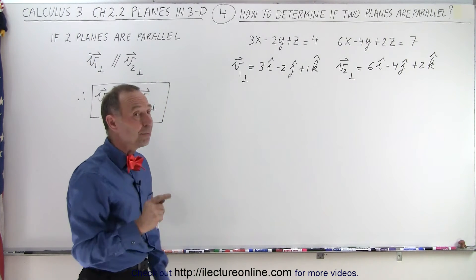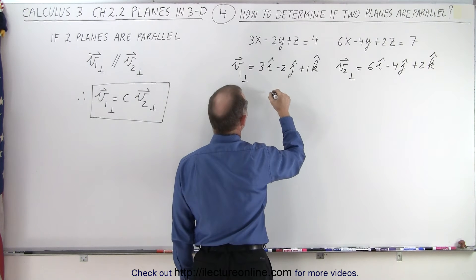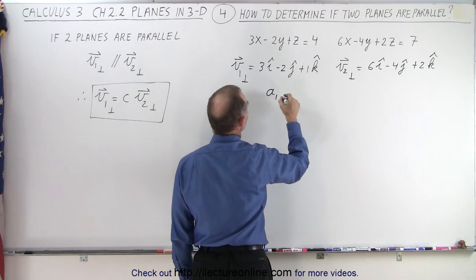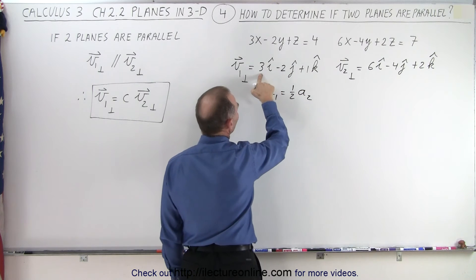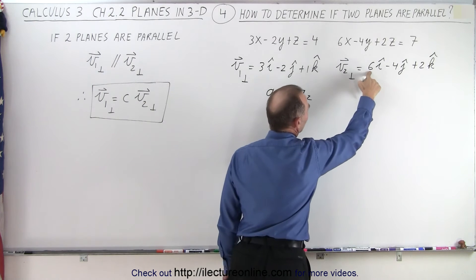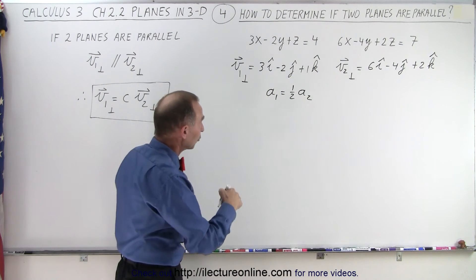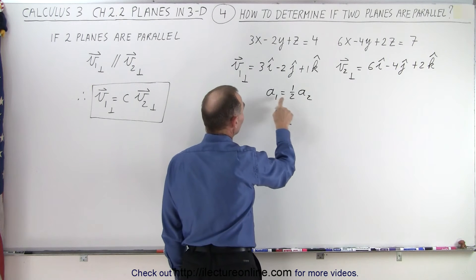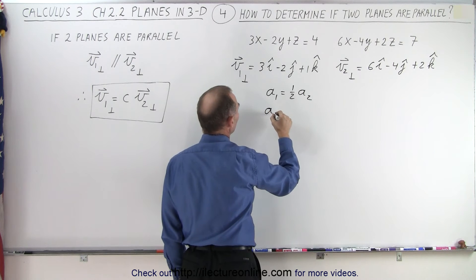Now, let's compare each component to one another. Notice that the component, so a sub 1 is equal to 1 half a sub 2. So if this is a sub 1 and this is a sub 2, the x component of vector 1 and the x component of vector 2, notice that a1, the magnitude, is half of the magnitude of vector 2.